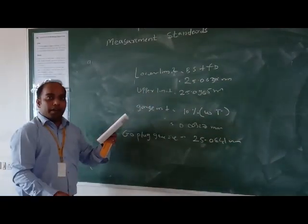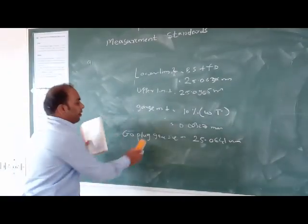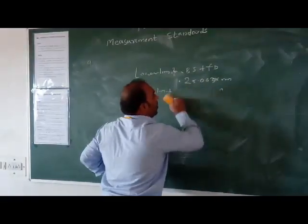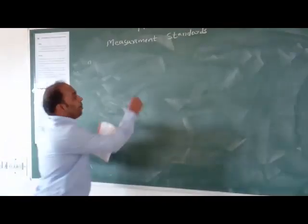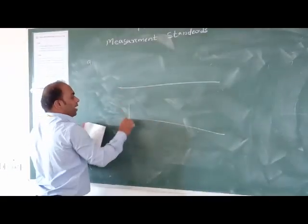Now we will give the graphical representation of gauge sizes. This shows the tolerance deposition at the end of the hole, with gauge maker tolerance of 0.00326mm.